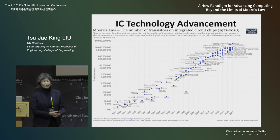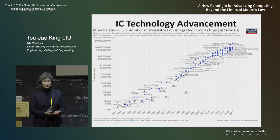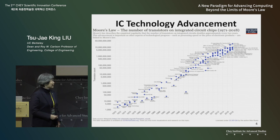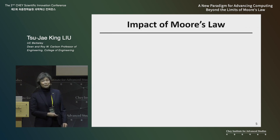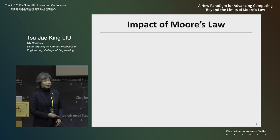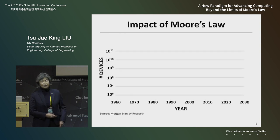Today, the most advanced integrated circuit products have over 20 billion transistors on a chip that's maybe the size of your thumbnail. So the transistors are really nanometer scale today — a very impressive accomplishment over many years due to advancements in manufacturing technology.